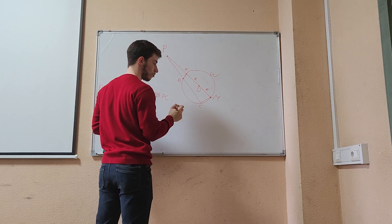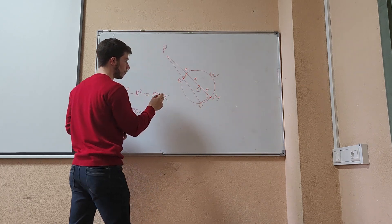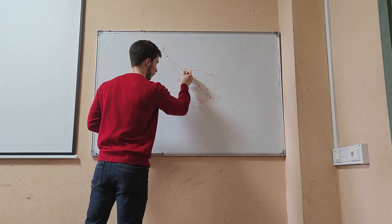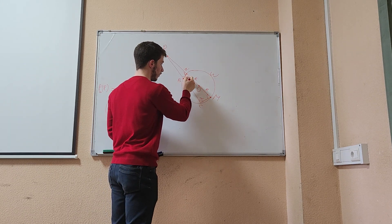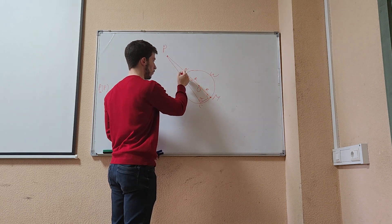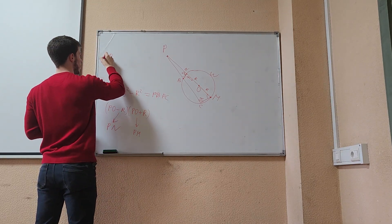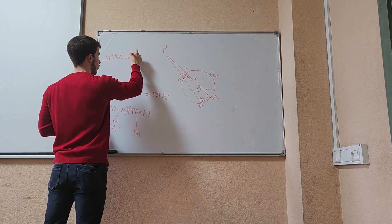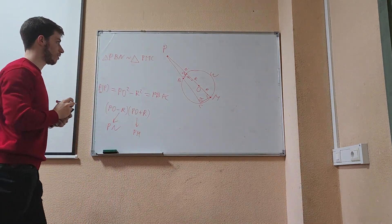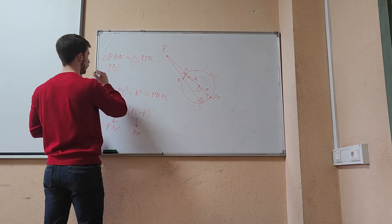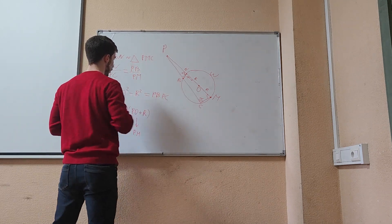Now let's prove that PN times PM equals PB times PC. Because BMC is inscribed in circle omega, angle M equals angle B and angle N equals angle C. If we assign angle C as alpha, then angle B and M will be 180 minus alpha, so angle PNB must be alpha. Similarly for the other angle, triangle PBN is similar to the corresponding triangle, giving us PN over PC equals PB over PN, which is what we wanted to prove.